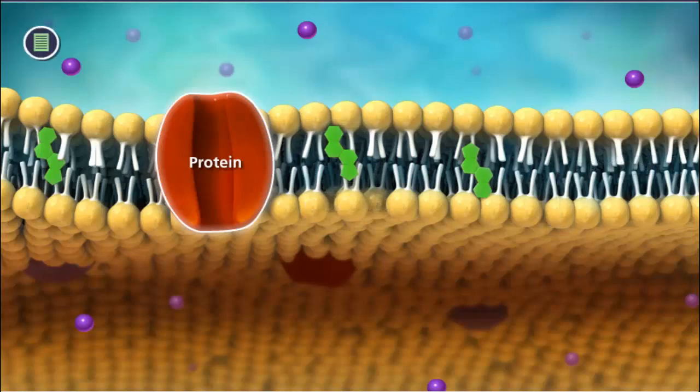A plasma membrane contains different types of proteins, which are specific to the particular function of the cell. These proteins also enable the cell to interact with its environment.